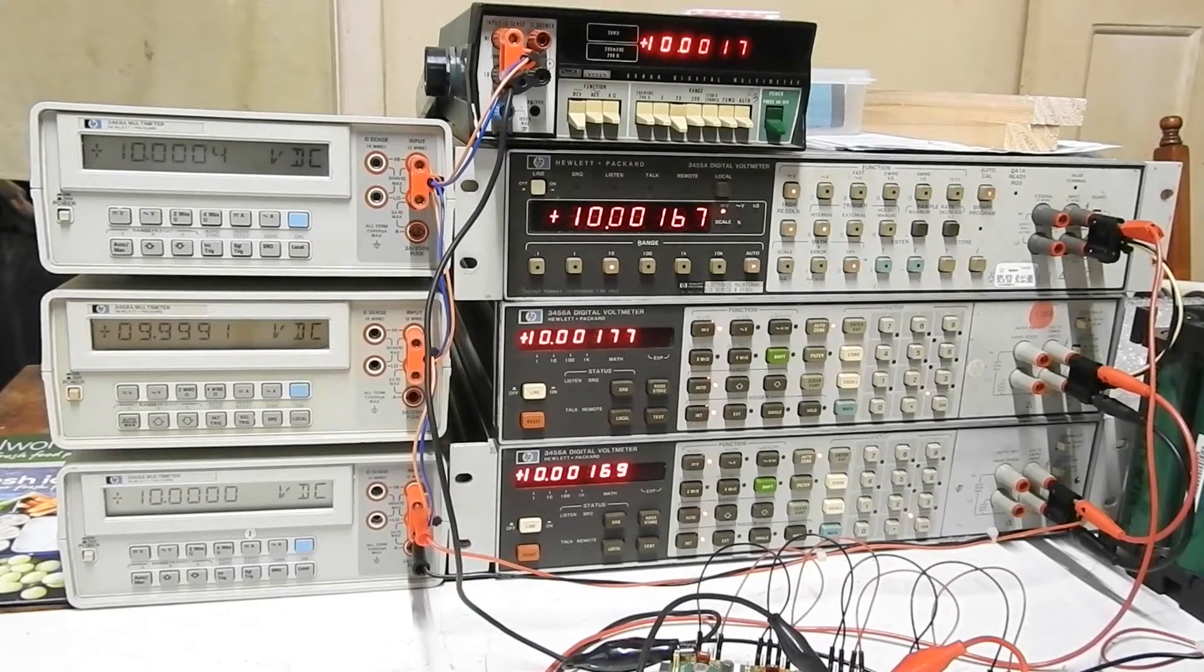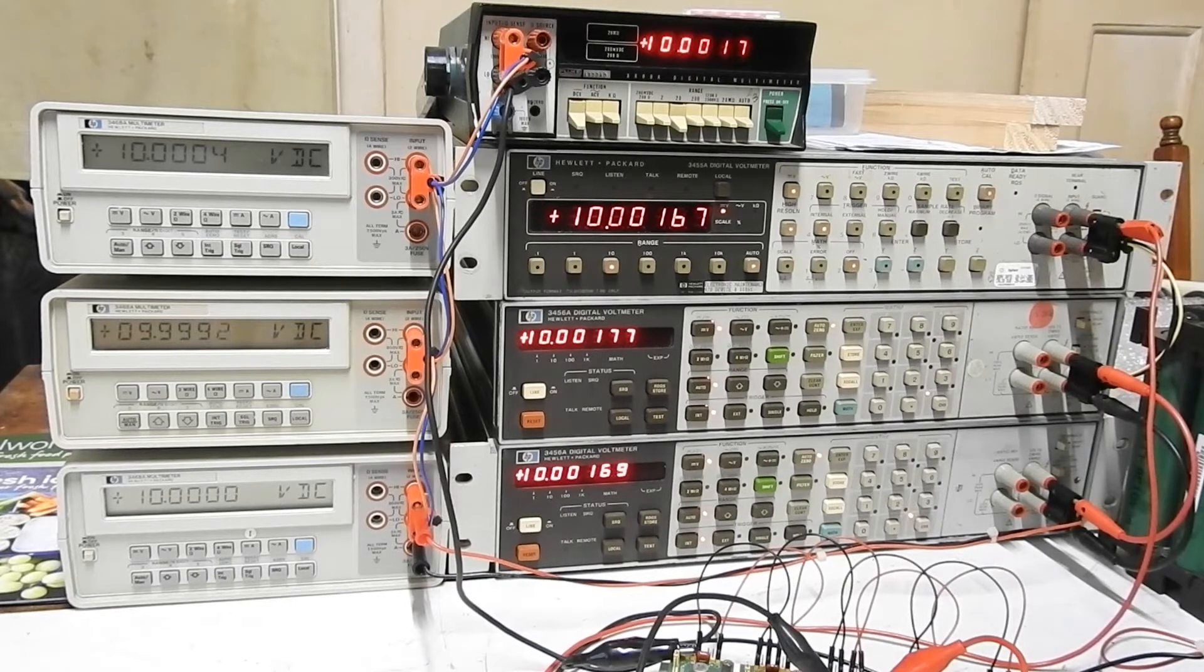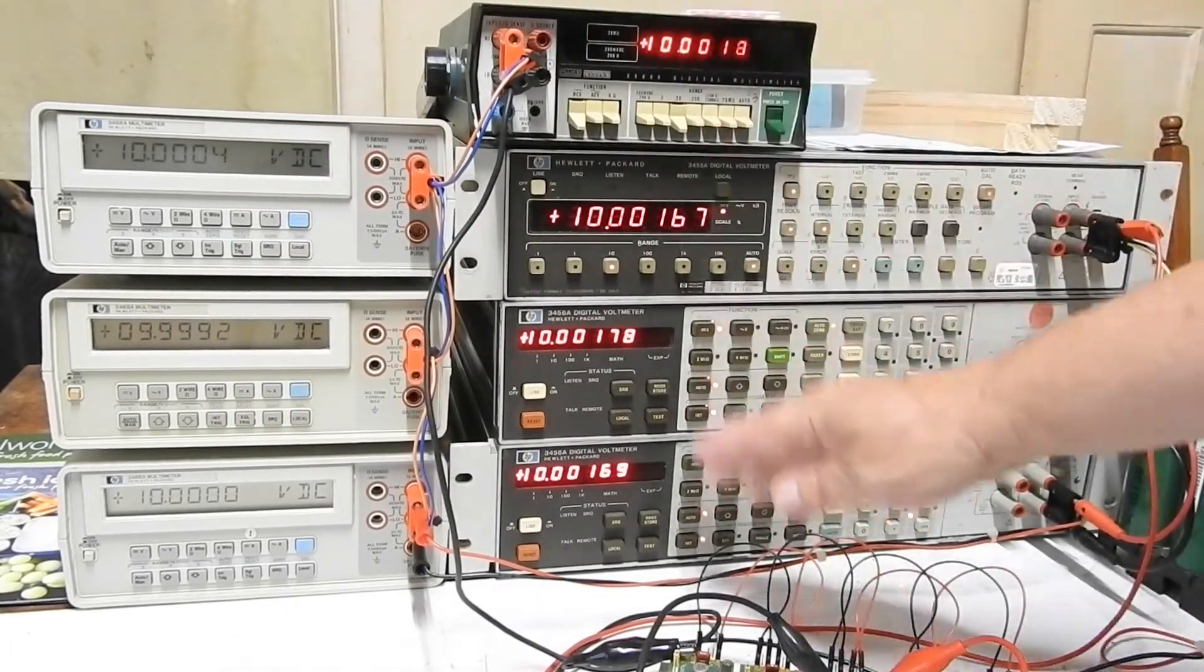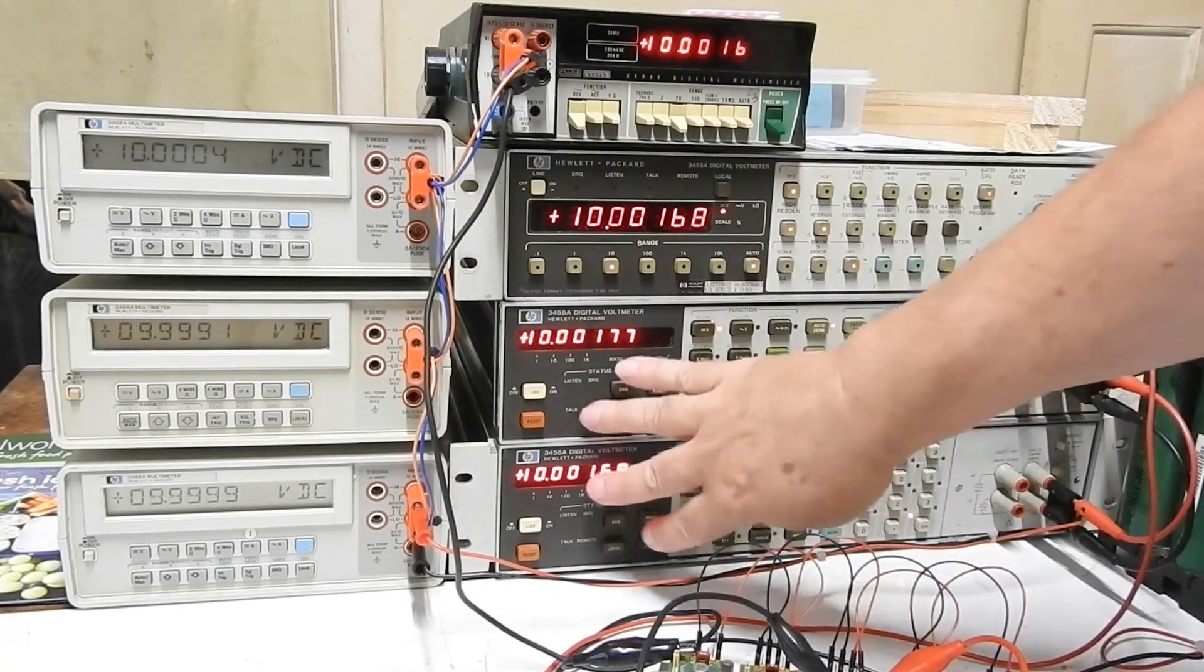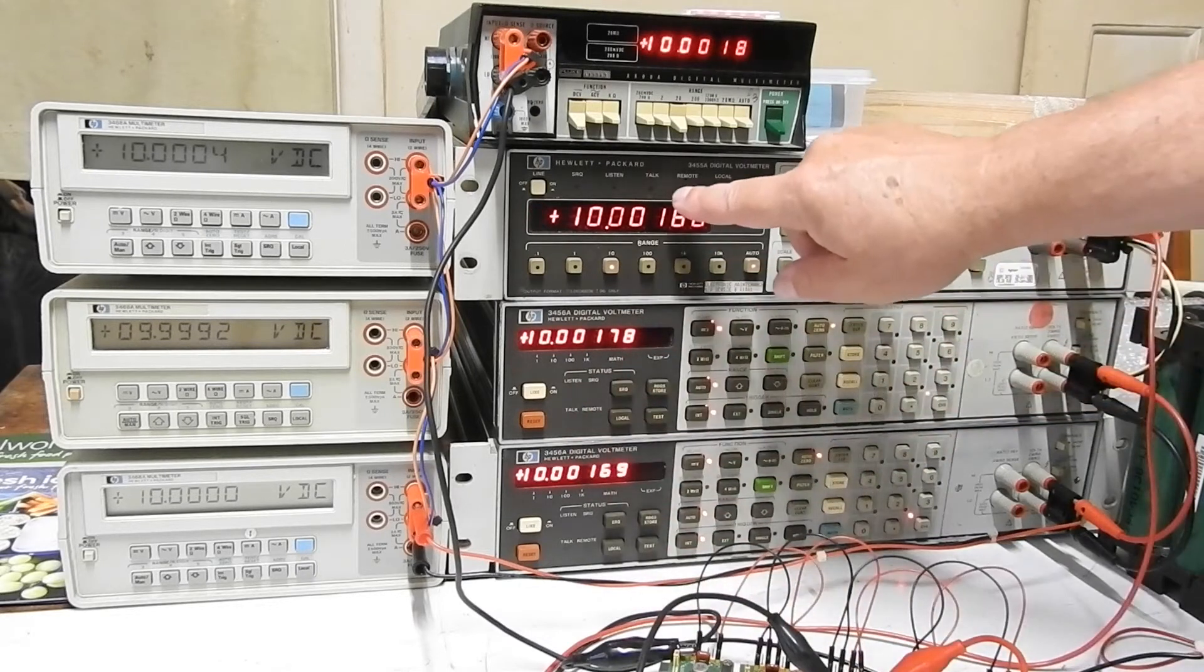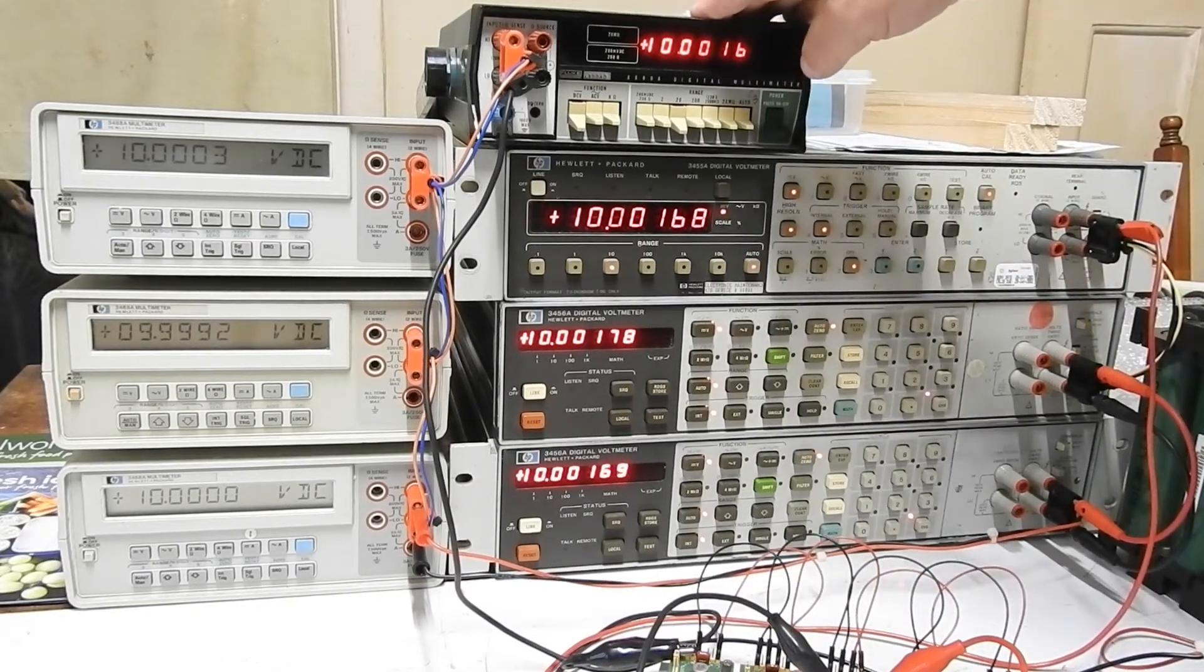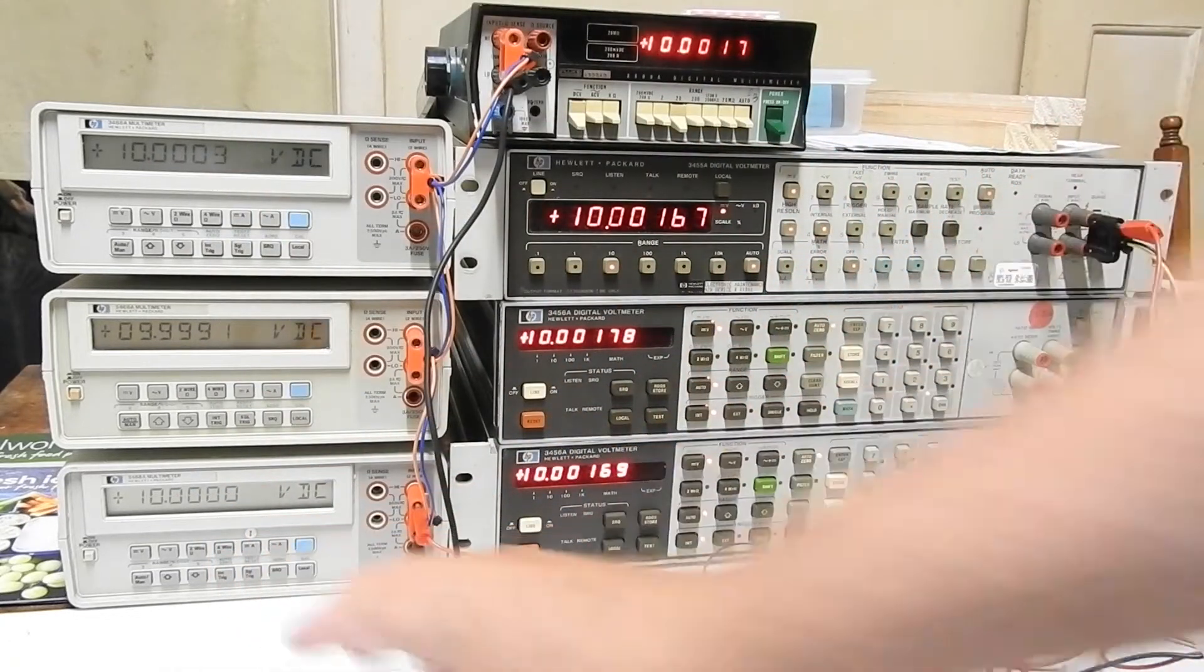Welcome to my collection of reasonably high precision multimeters and voltmeters. The four multimeters are 5.5 digits and the three voltmeters are 6.5 digits. We've got two Hewlett Packard 3456As, an HP 3455A, a Fluke 8800A, and three HP 3468As.